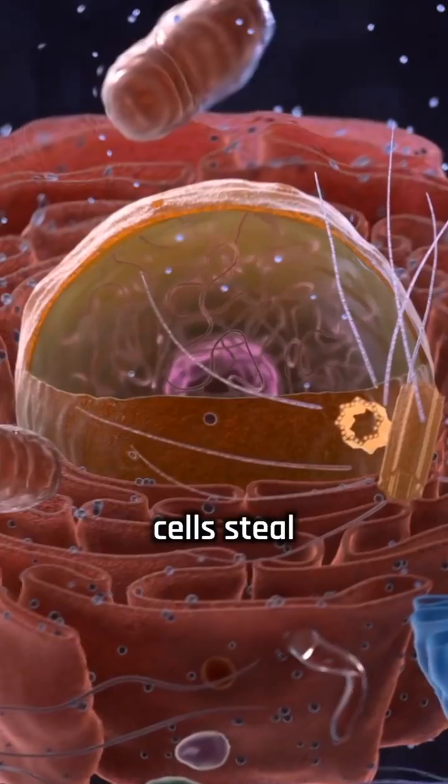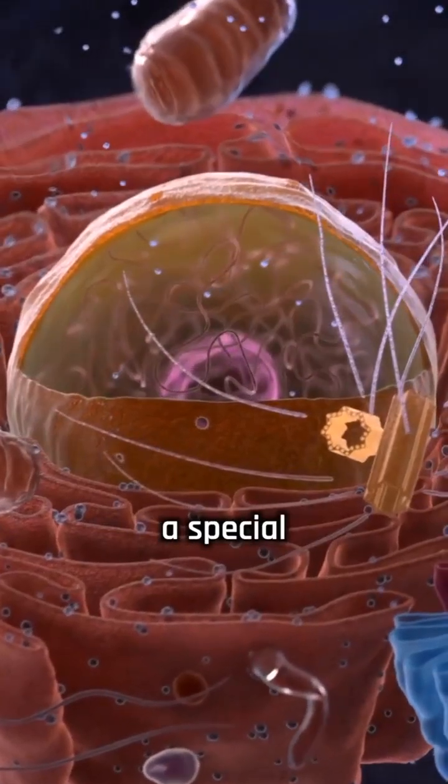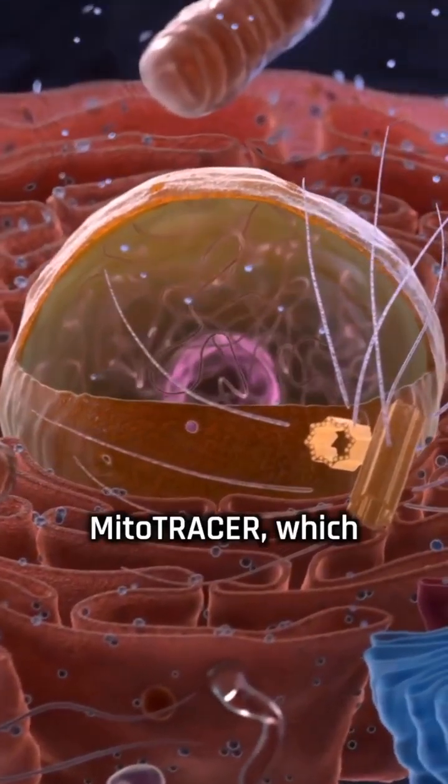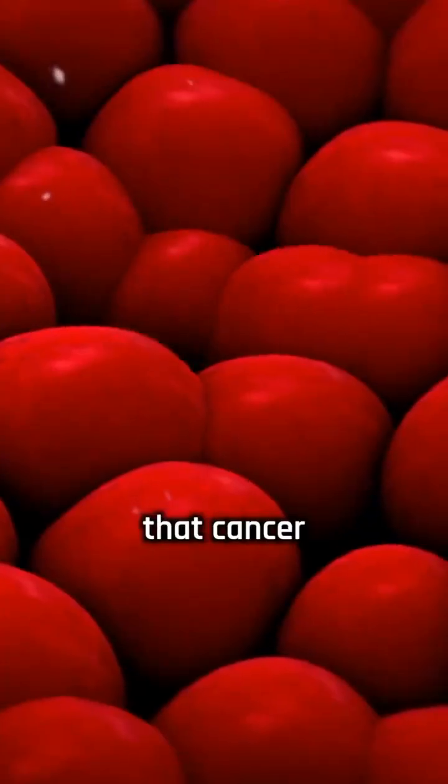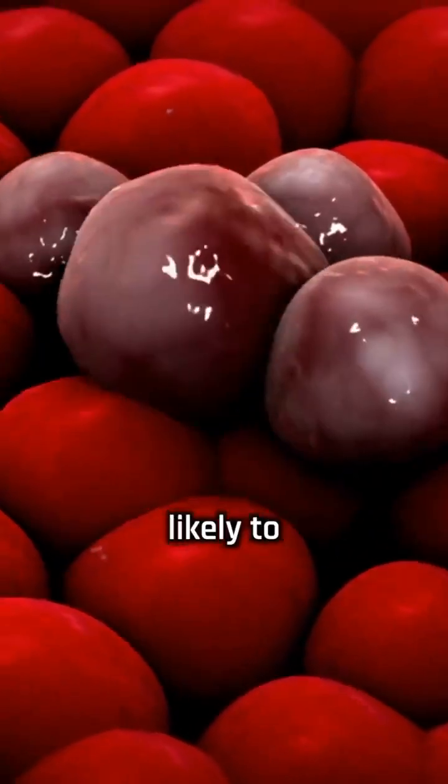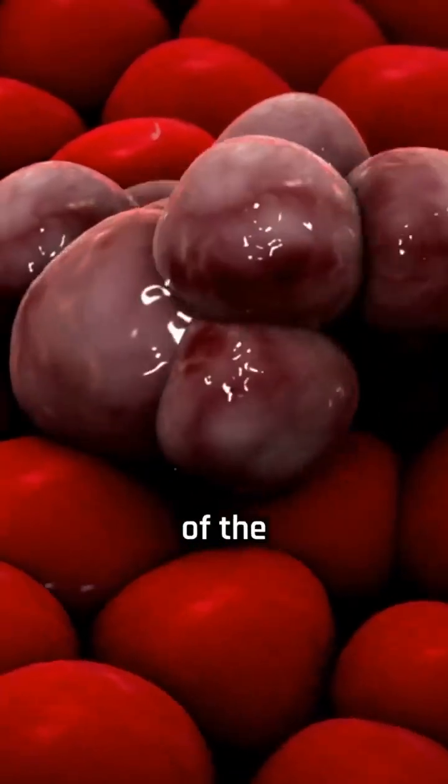To study how cancer cells steal mitochondria, the team developed a special tool called mitotracer, which labels cells that absorb mitochondria from other cells. They found that cancer cells with stolen mitochondria were more likely to cause dangerous metastasis in other parts of the body.